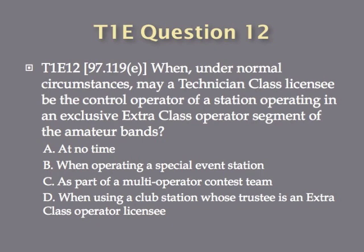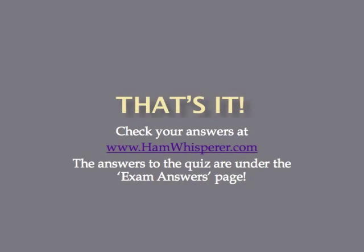Question 12: When, under normal circumstances, may a technician class licensee be the control operator of a station operating in an exclusive extra-class operator segment of the amateur bands? A, at no time. B, when operating a special event station. C, as part of a multi-operator contest team. Or D, when using a club station whose trustee is an extra-class operator licensee. That concludes our T1E lesson. Go to hamwhisperer.com, go to the exam answers page, and look under the T1E section to get the answers to the quiz. Until next time, in lesson six, this is Andy, KE4GKP, saying 73, and I hope to hear you on the air soon.